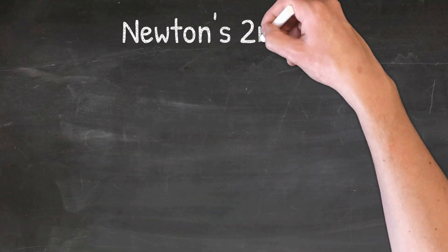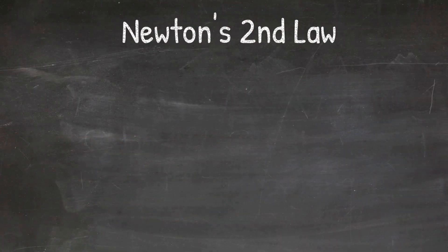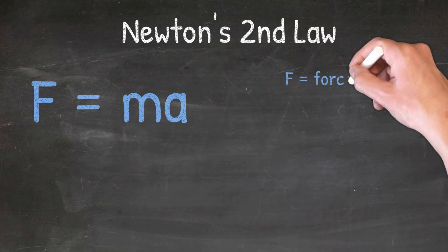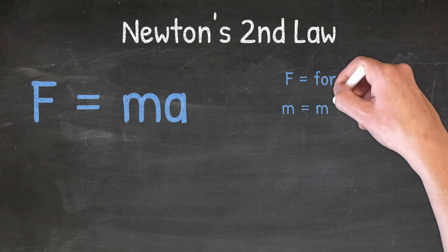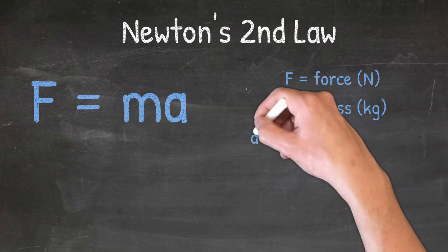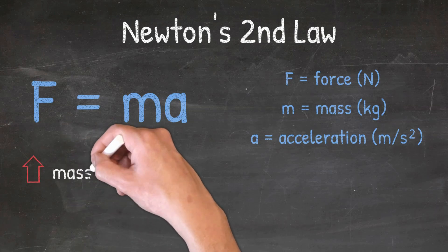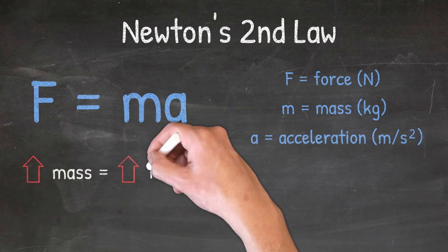Newton's second law also has a formula that goes with it, and we can better understand the law by understanding the formula. The formula is F equals MA, where F is the force in Newtons, M is the mass in kilograms, and A is acceleration in meters per second squared. This formula shows us the relationship between force, mass, and acceleration. The larger the mass of the object, the more force it will take to accelerate it.